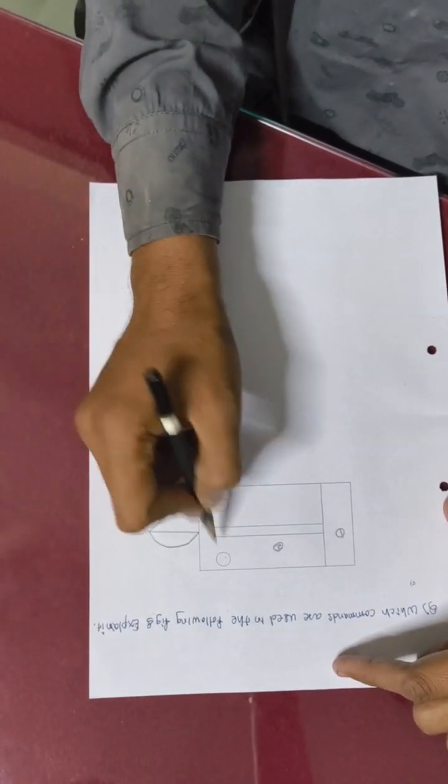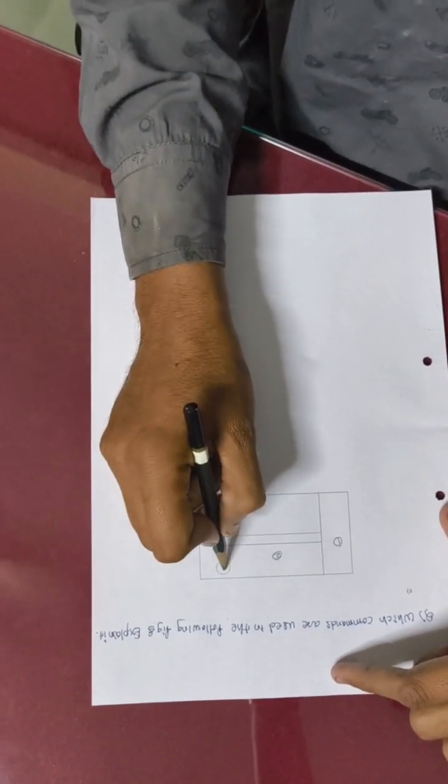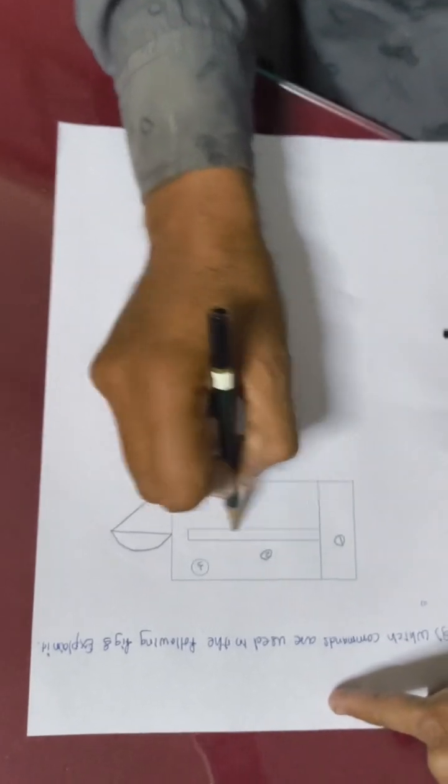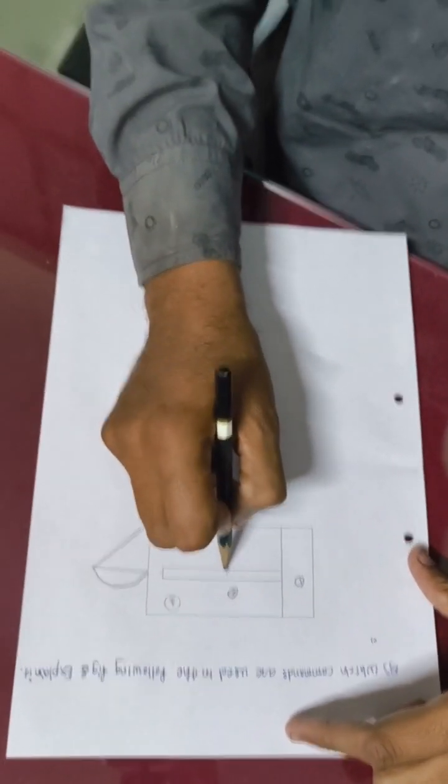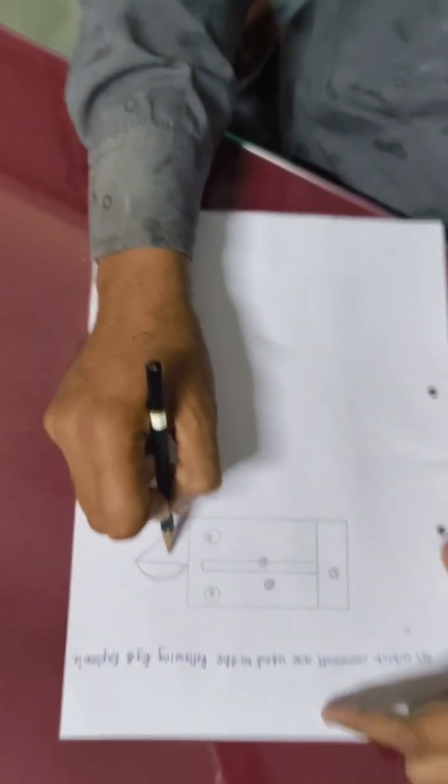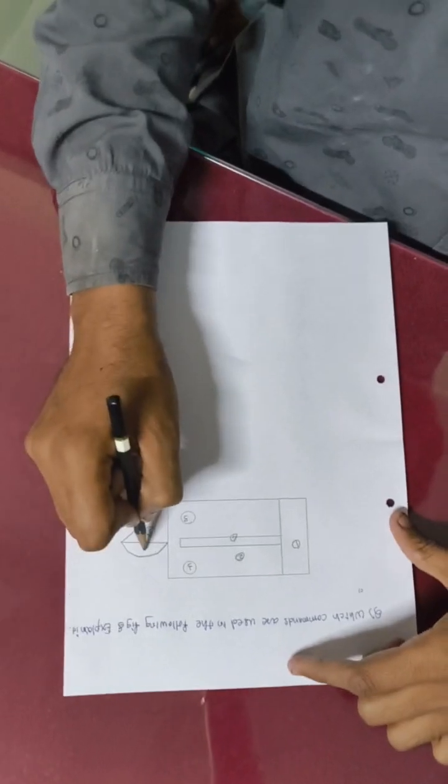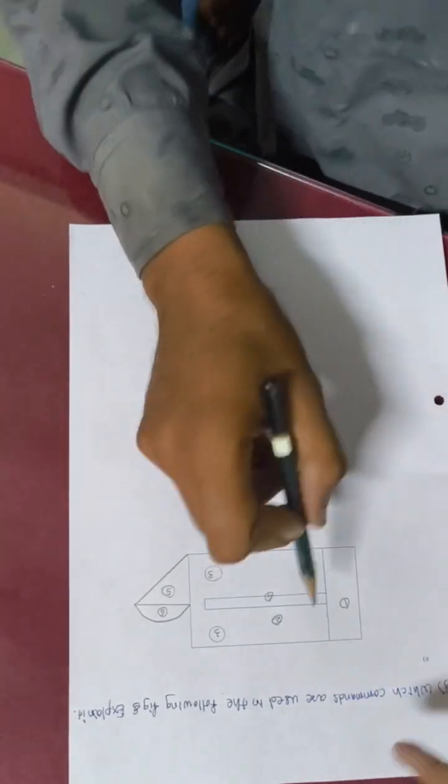This is the second part. For these two circles, this is the third part. For the small rim, this is the fourth part. This rectangle is the fifth part. And this semicircle is the sixth part.